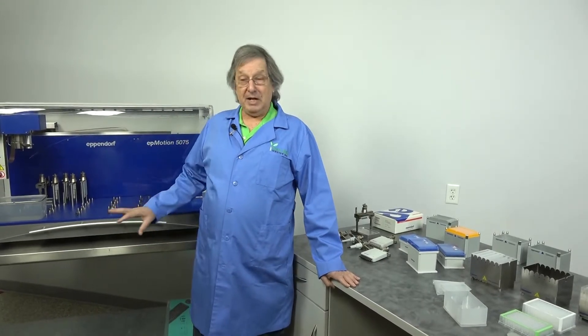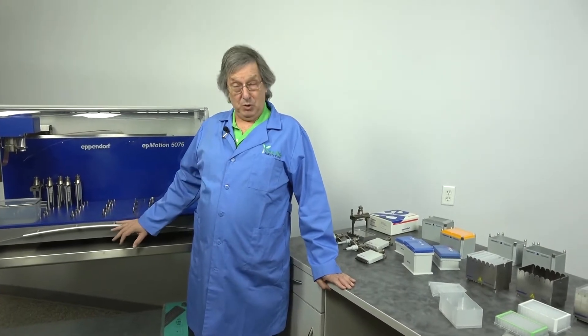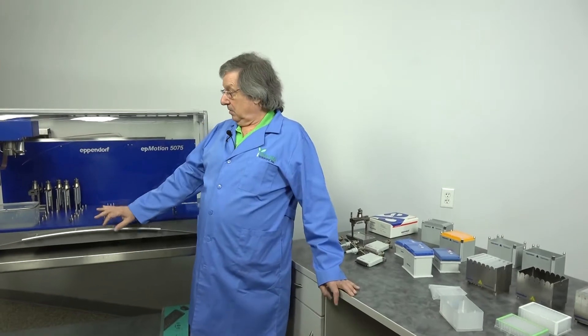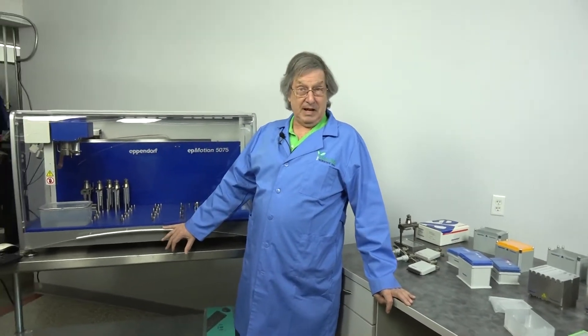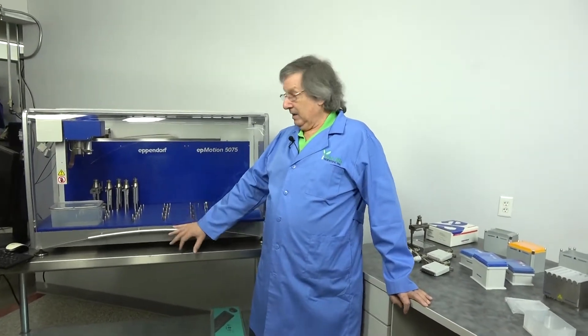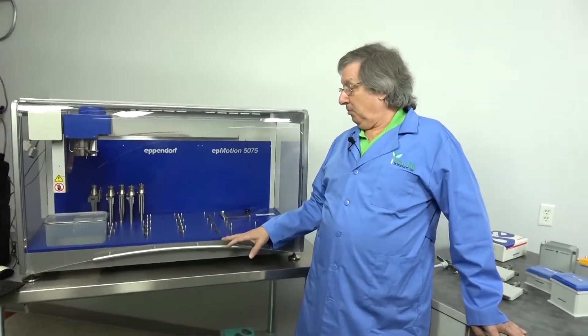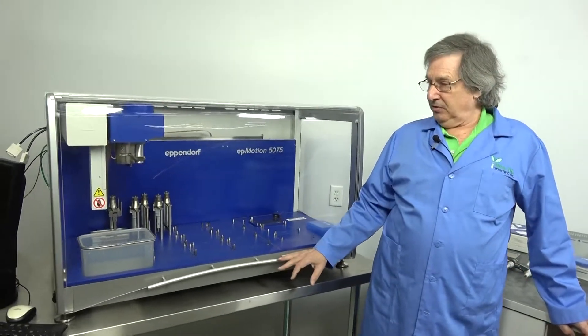In particular, the EP Motion Series, such as the Model 5075. This particular model is a Thermomixer model. It is available with a vacuum frame or without those options.